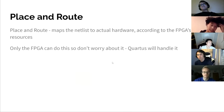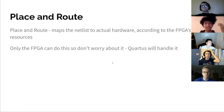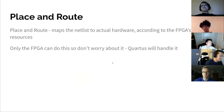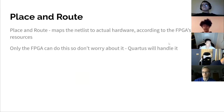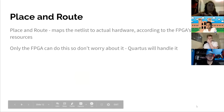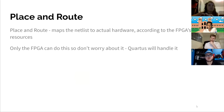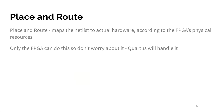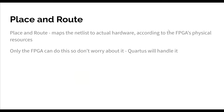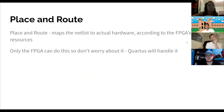Next up is place and route. This physically maps the netlist to the actual hardware — this is when the physical FPGA hardware comes into play. Only the FPGA can do this, so you don't actually have to worry about it because there's nothing you can do about it.